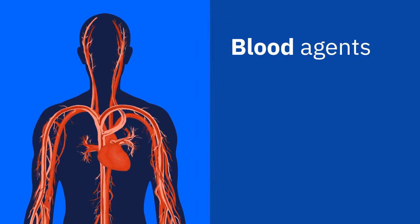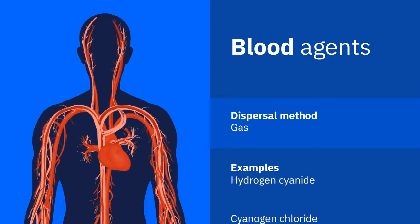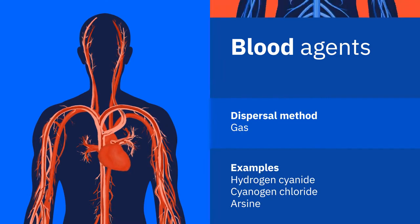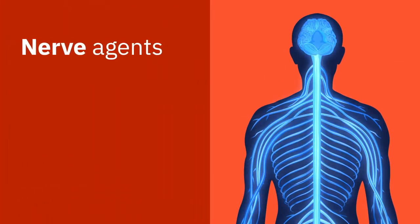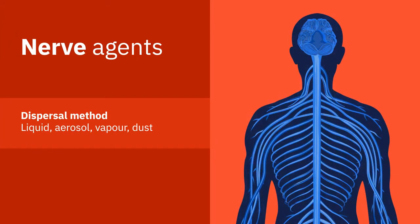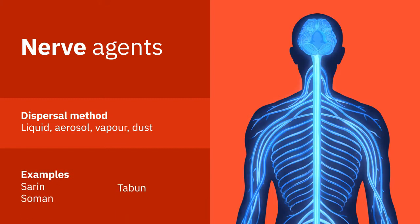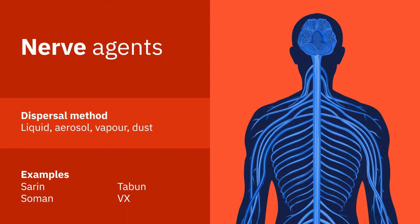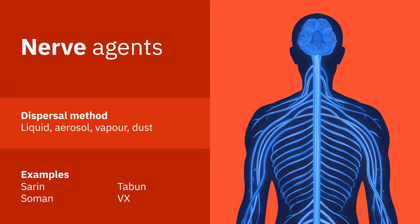Blood agents inhibit the ability of cells to use oxygen, effectively causing the body to suffocate. They generally enter the body through inhalation and are distributed via the blood. Nerve agents affect the peripheral and central nervous system, leading to hyper-stimulation of muscles, glands and other nerves. They are highly toxic with rapid effects and act primarily by absorption through the skin and lungs.